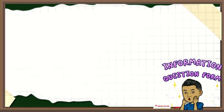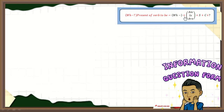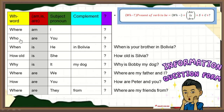Ahora pasamos a las preguntas abiertas o preguntas de información en inglés — information questions or WH questions. La fórmula es la misma que las preguntas cerradas, solo que le vamos a agregar la WH word al inicio: WH question plus verb to be plus subject plus complement plus question mark. For example: Where am I? — ¿Dónde estoy? Who are you? — ¿Quién eres tú? When is he in Bolivia? — ¿Cuándo está él en Bolivia? How old is she? — ¿Cuántos años tiene ella? Why is it my dog? Where are we? — ¿Dónde estamos? How are you? — ¿Cómo están ustedes? Where are they from? — ¿De dónde son ellos?